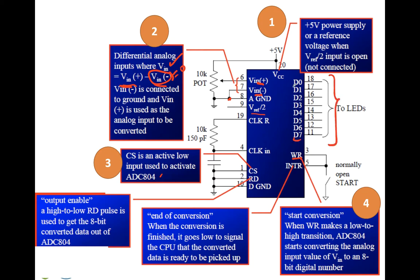These are the 8 bits of the output from D0 to D7 and they will be connected to some LEDs. Next is the end of conversion or the INTR pin. When the conversion is finished and we have a digital output, it goes low to signal the CPU that the converted data is ready to be picked up.